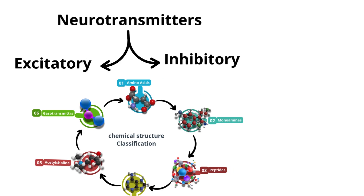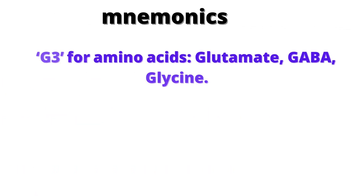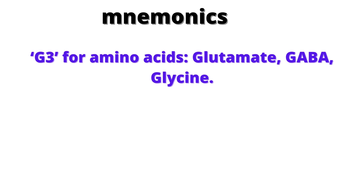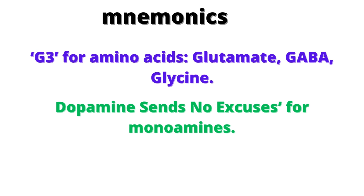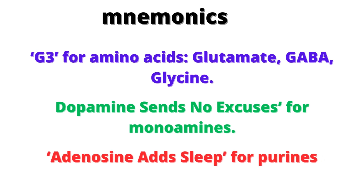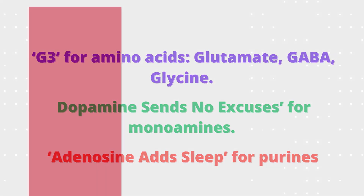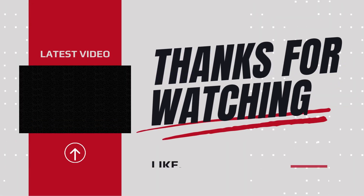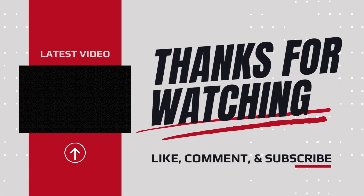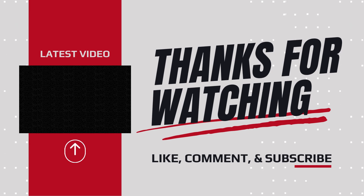To summarize, neurotransmitters are divided into excitatory and inhibitory types and can be classified into amino acids, monoamines, peptides, purines, acetylcholine, and gasotransmitters. Remember our mnemonics: G3 for amino acids (glutamate, GABA, glycine), 'Dopamine Sends No Excuses' for monoamines, and 'Adenosine Adds Sleep' for purines. If you found this video helpful, like, subscribe, and hit the bell icon for more educational content.